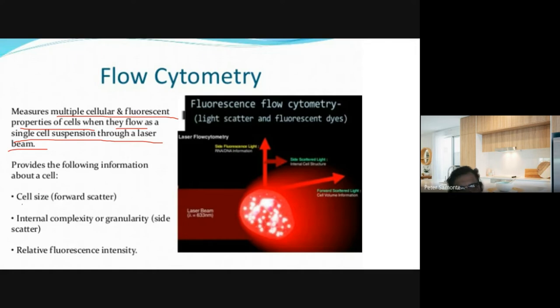This is a better version because it can differentiate five cell types: neutrophils, eosinophils, basophils, lymphocytes, and monocytes. It can also be used for mean cell volume. With electrical impedance you are able to identify cell size, internal complexity or granularity, and relative fluorescence.